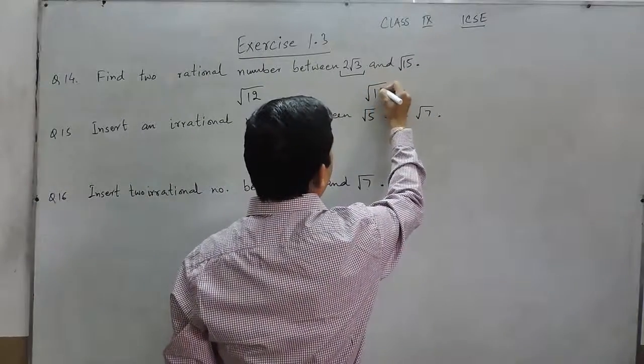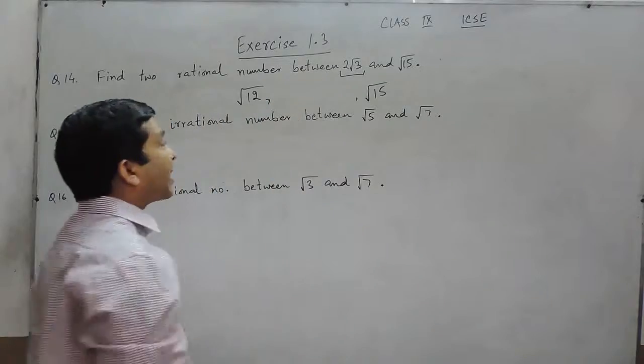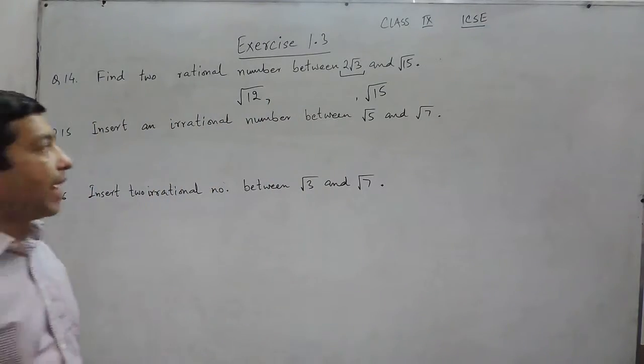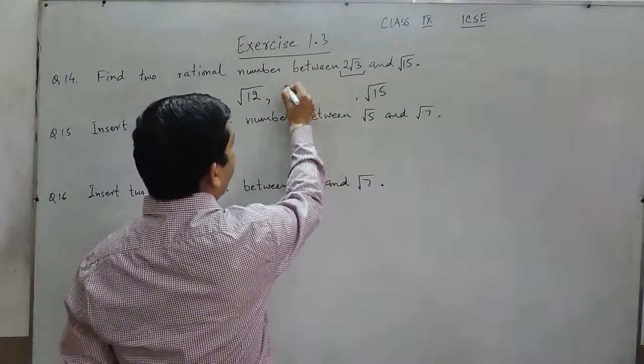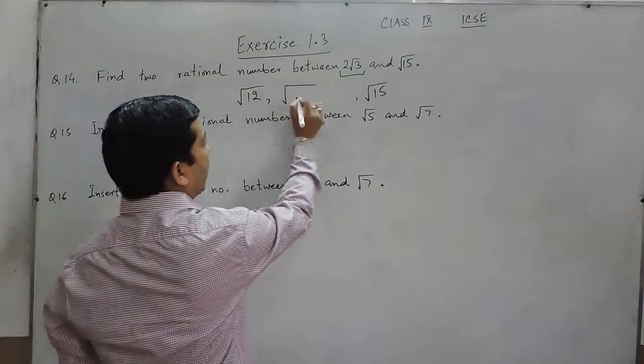While this is under root of 15. When we talk about any rational number between the two, that means we want a number which is a perfect square. So after 12...